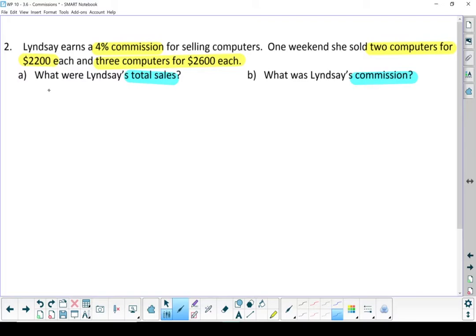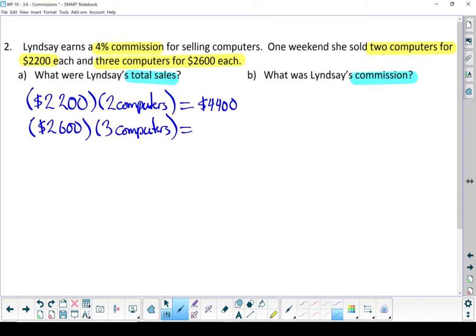Two computers for $2,200 comes to $4,400 worth of sales there. And then three computers for $2,600. I multiply those together. I get $7,800. Let's add those all up.